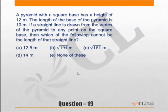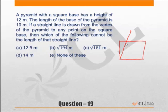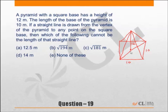Practice exercise 3: a pyramid with a square base has a height of 12 meters. The base is a square and this is the pyramid with the top at the apex. The height of the pyramid from the center is given as 12. The length of the base is 10 meters. Since the base is 10 by 10, the diagonal of the base is 10 root 2.